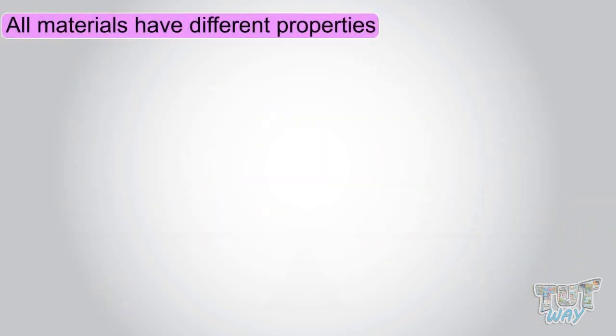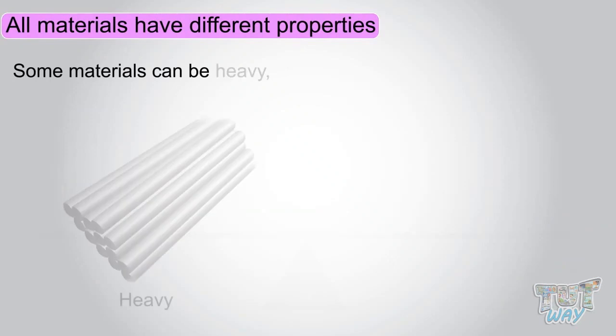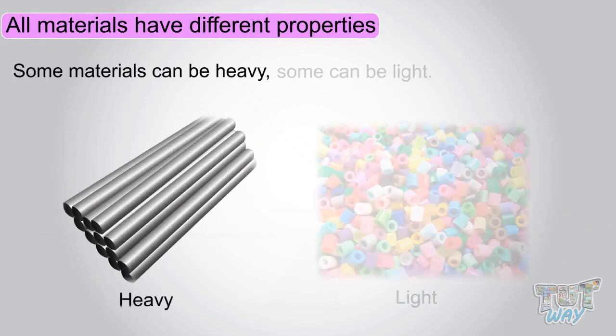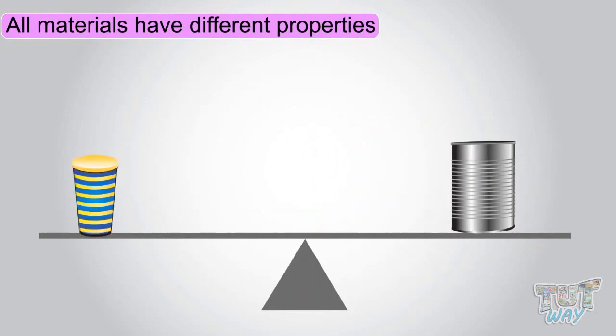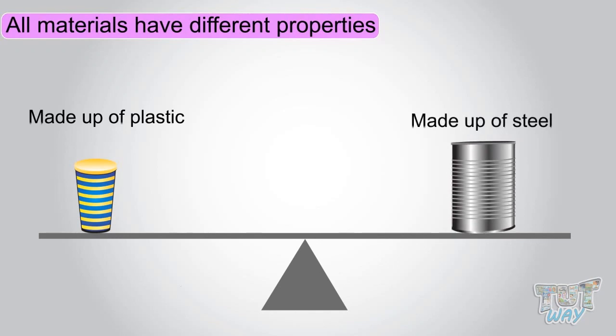Like some material can be heavy, some can be light. If you have two tumblers, one is made of plastic and one made of steel. The one made up of plastic would be lighter.